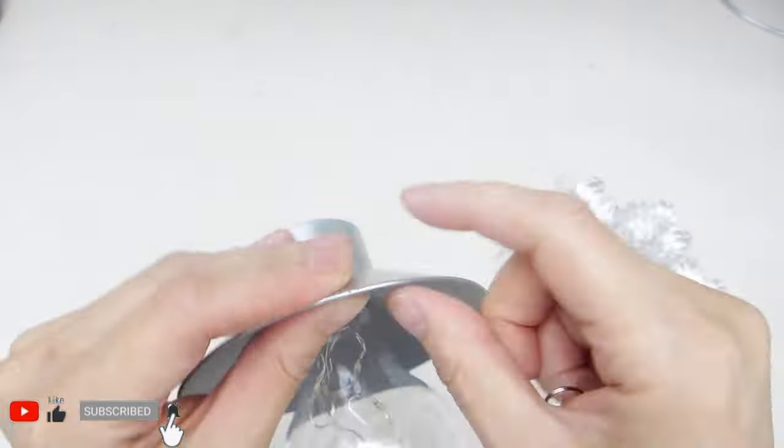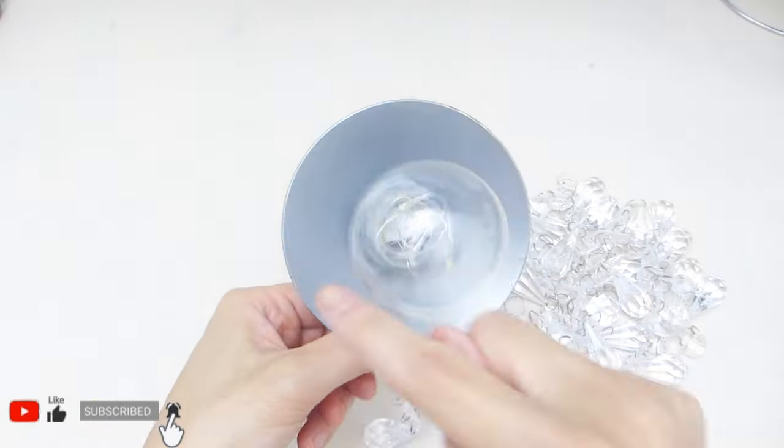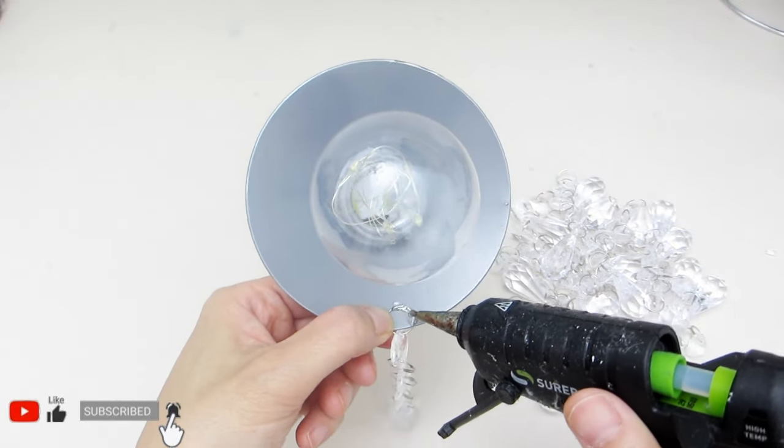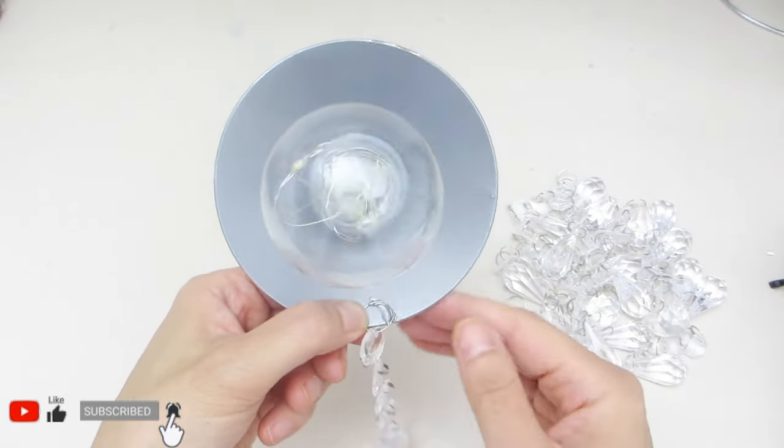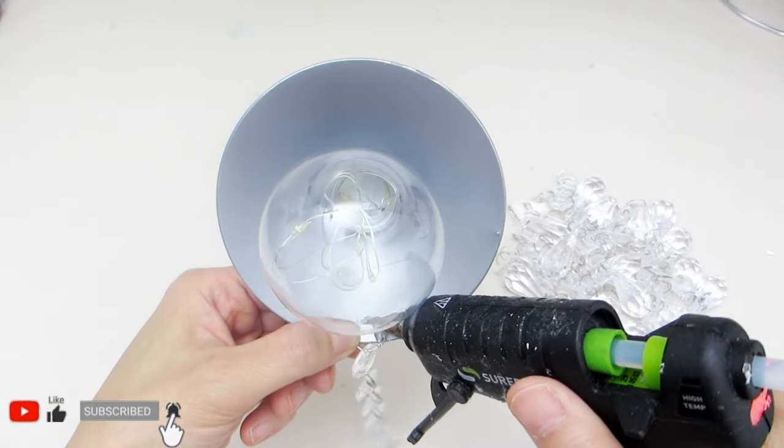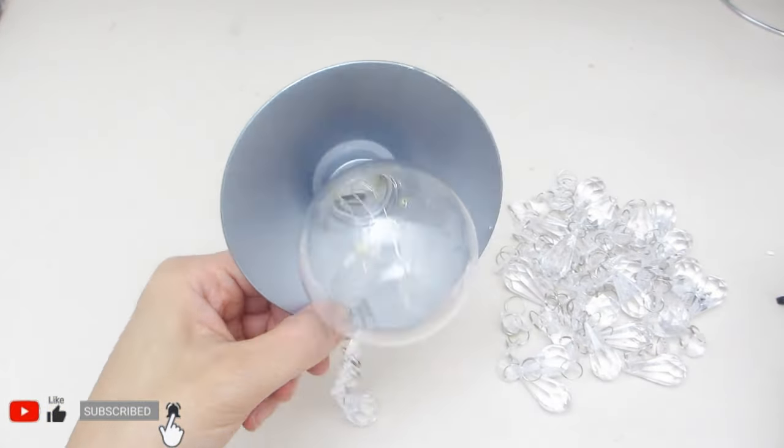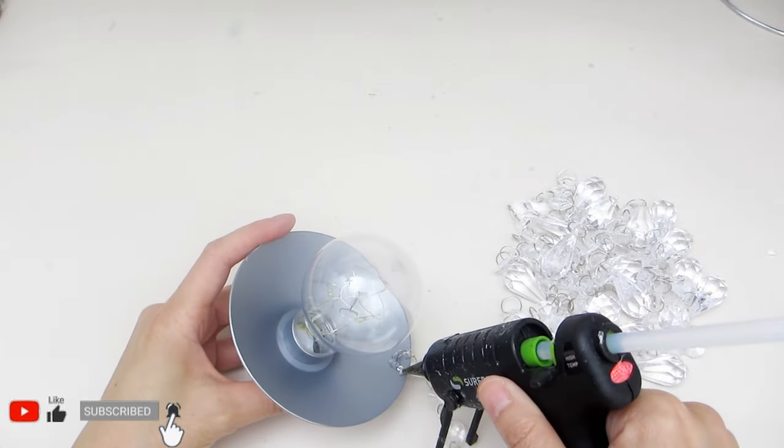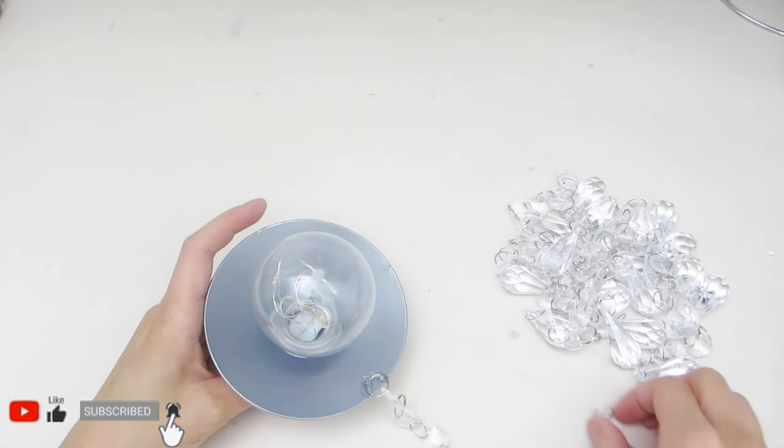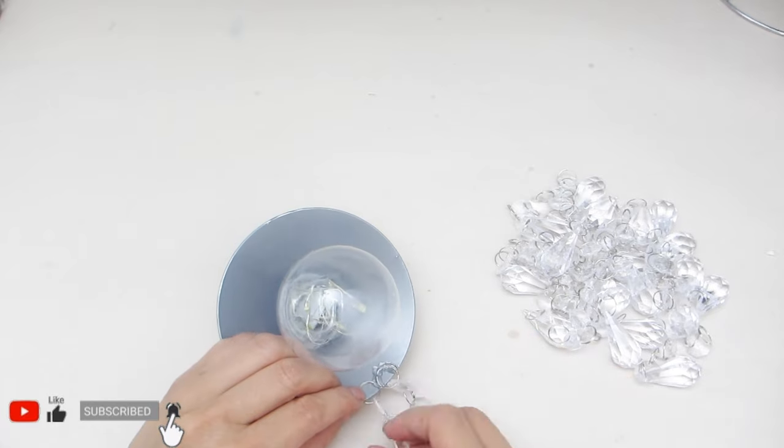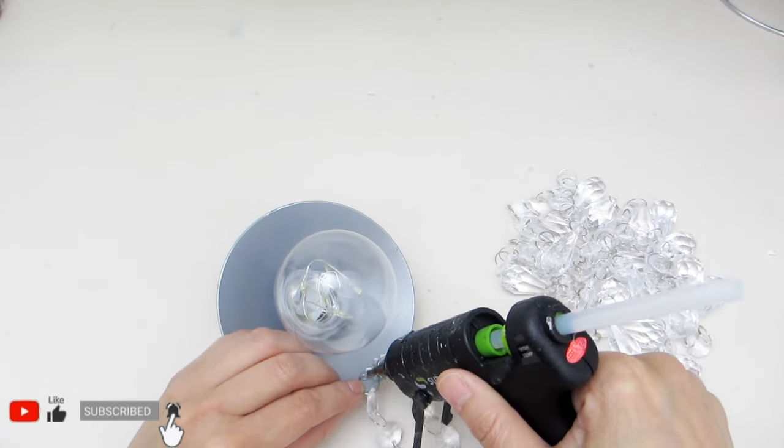And while hot gluing the jump rings to the lampshade make sure you don't burn your fingers in the process. The hot glue can get pretty hot so use gloves if you need to. The thing about hanging these garlands is that you want the glue to dry quickly so using any other type of glue won't work that well. And hot glue is also strong enough to give these acrylic crystal garlands a secure hold.